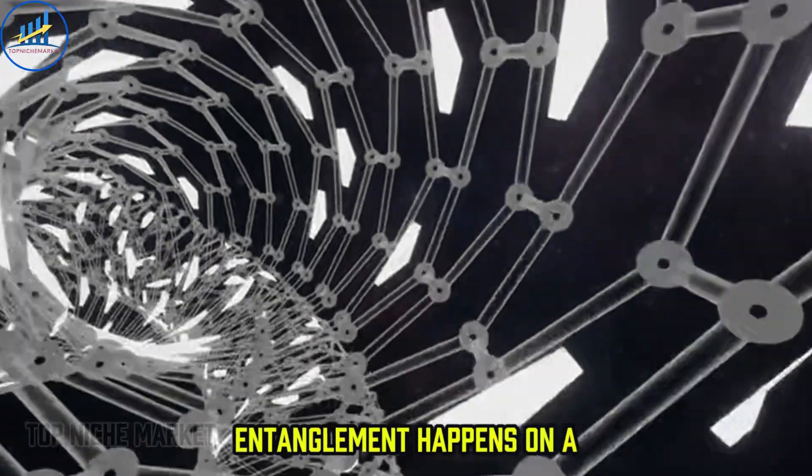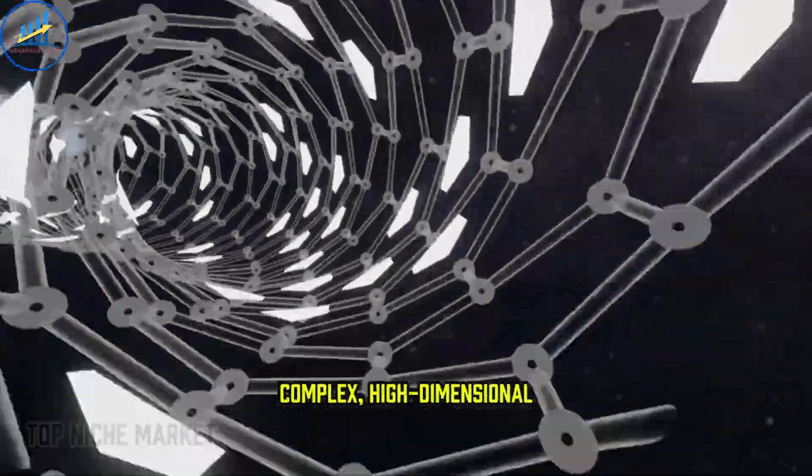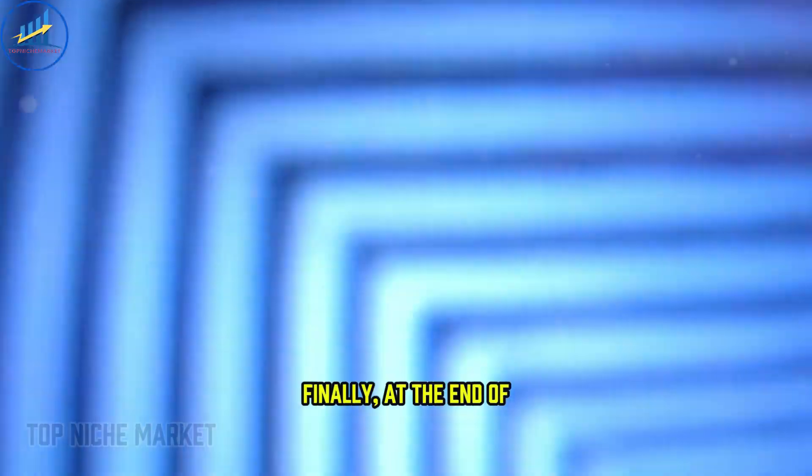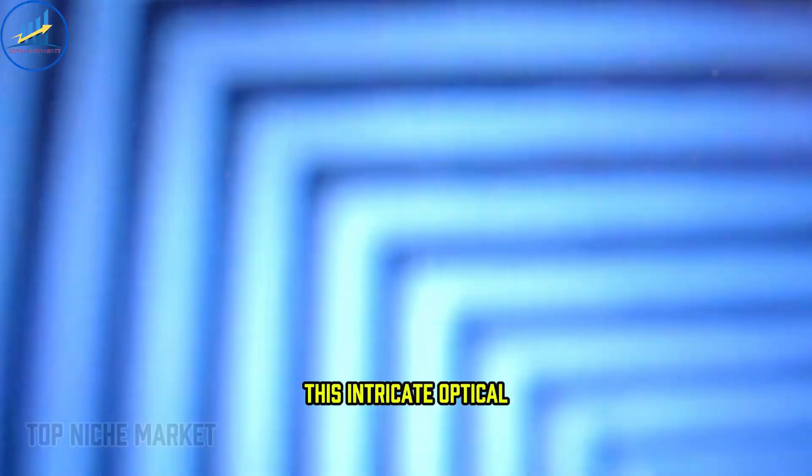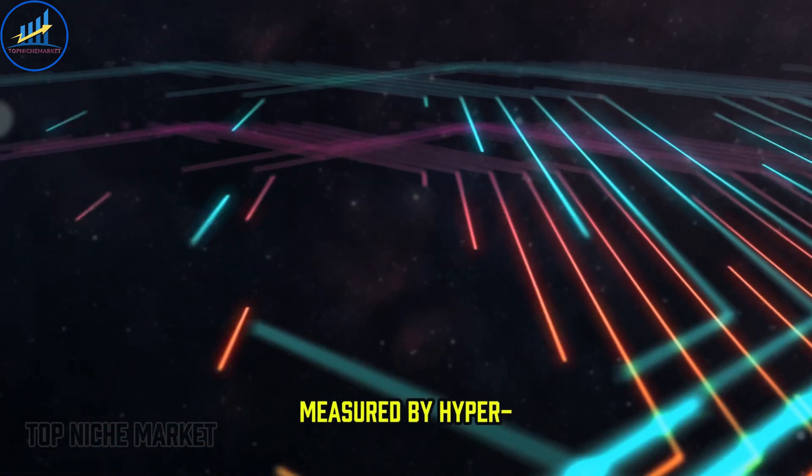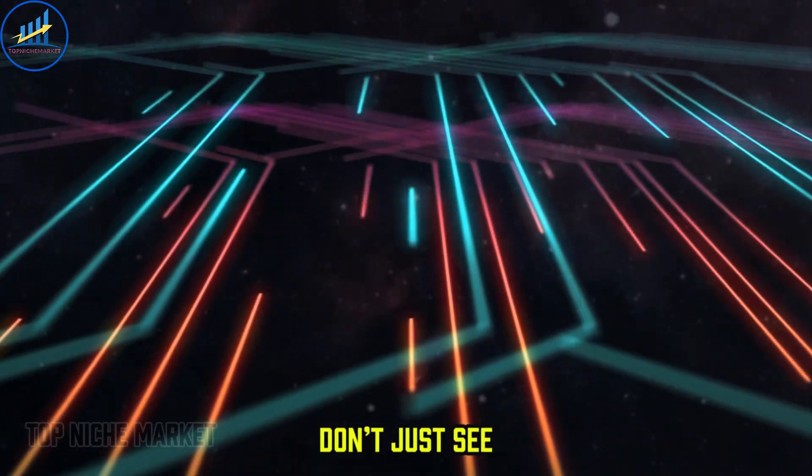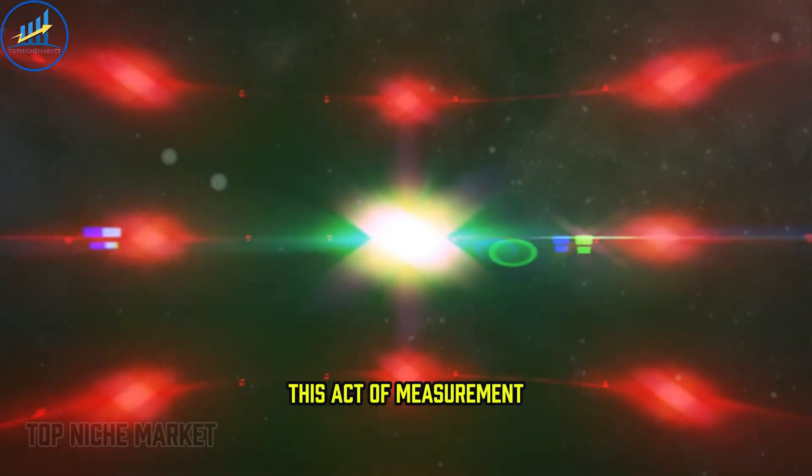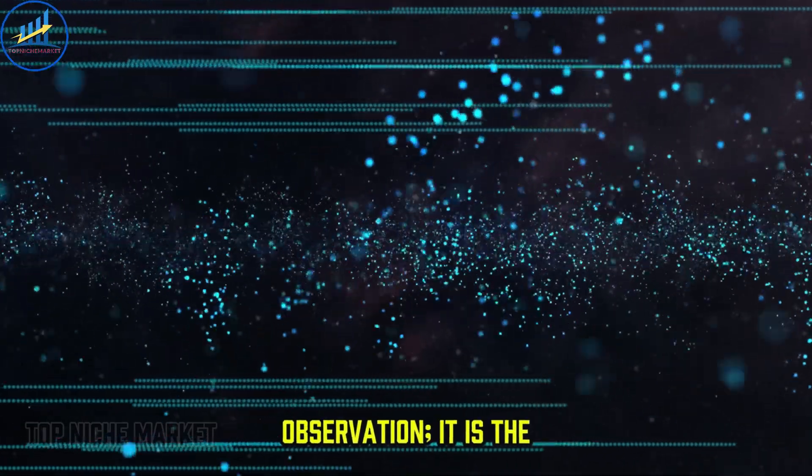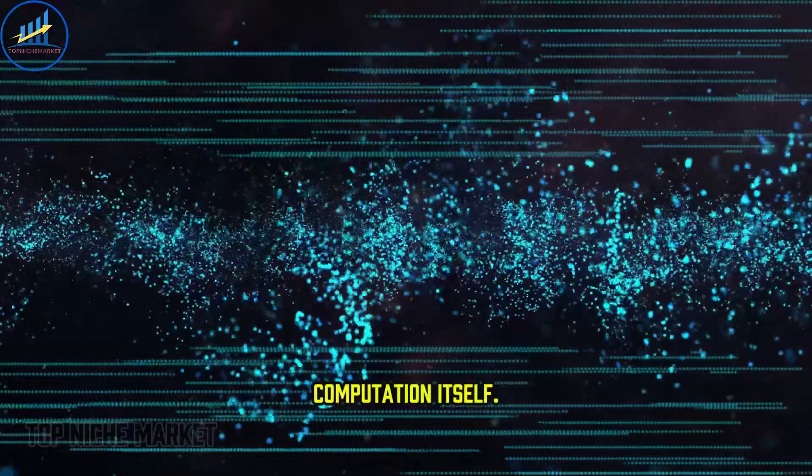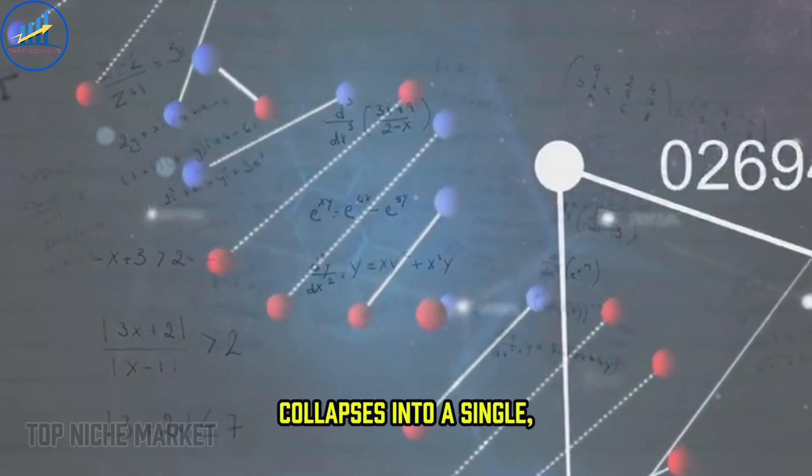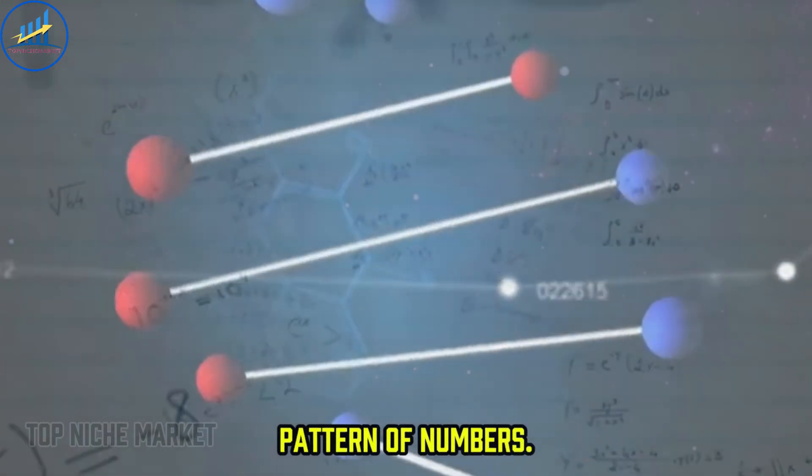In Xanadu's machine, this entanglement happens on a massive scale, creating a complex, high-dimensional web of interconnected possibilities. This web is where the problem is encoded. Finally, at the end of this intricate optical maze, the light is measured by hypersensitive photodetectors. These detectors don't just see light. They can count individual photons. This act of measurement is not a passive observation. It is the final step of the computation itself. The moment the photons are measured, their vast web of possibilities collapses into a single definite outcome, a pattern of numbers. This pattern is the answer to the complex problem that was posed.